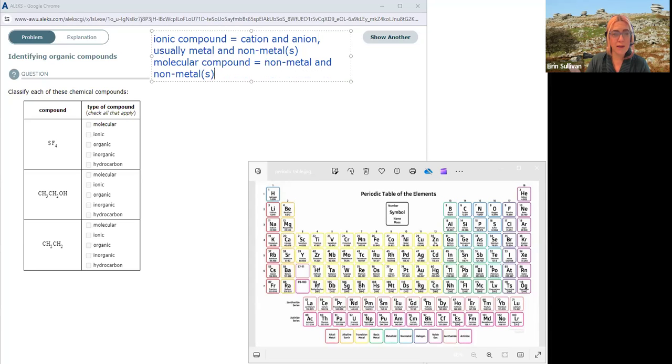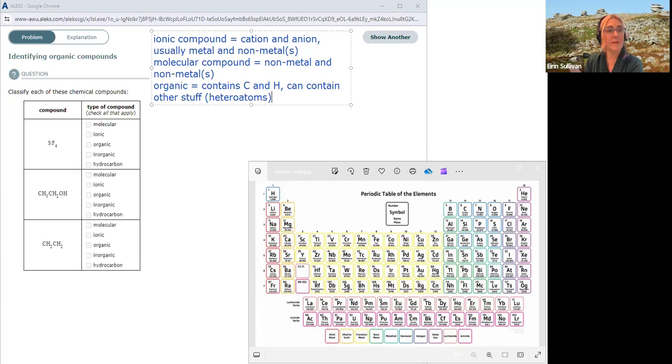Within molecular compounds, there are some subgroups. We'll go big to small. So organic contains carbon and hydrogen. Organic always contains carbon and hydrogen. Can also contain other stuff, this is like the big group. Other stuff is known as heteroatoms. Bonding in organic compounds is always going to be molecular covalent bonding. A subset of organic compounds is hydrocarbons, which only contain carbon and hydrogen.